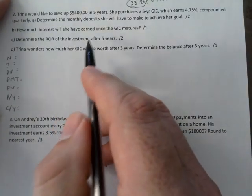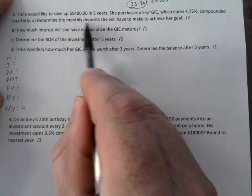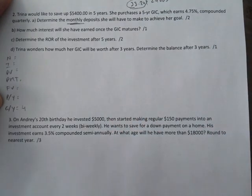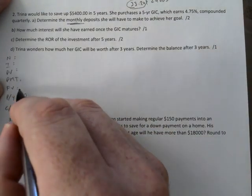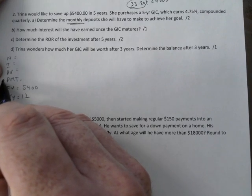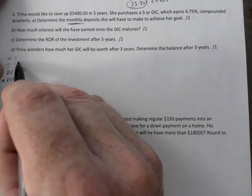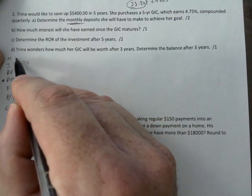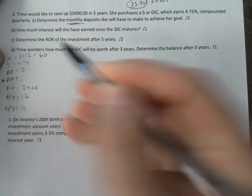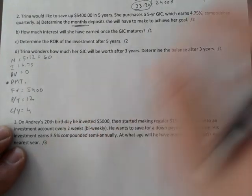The compounding period is four because it says quarterly. There are payments being made, monthly deposits, so P/Y is 12. Future value we want $5400, that would be positive. Payment is what we're calculating. Present value, since it doesn't tell us you're putting in a large amount up front, it's zero. Interest is 4.75%. N would be number of years times P/Y, so 5 times 12, that's 60.